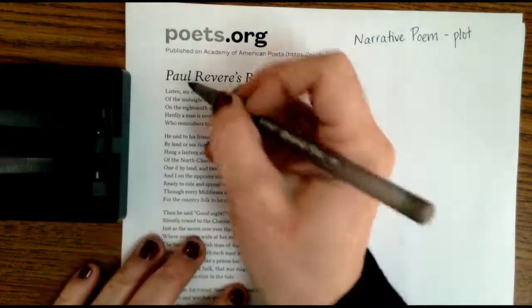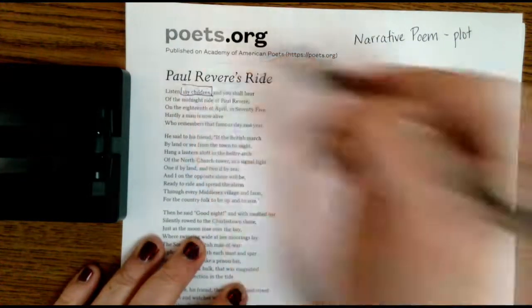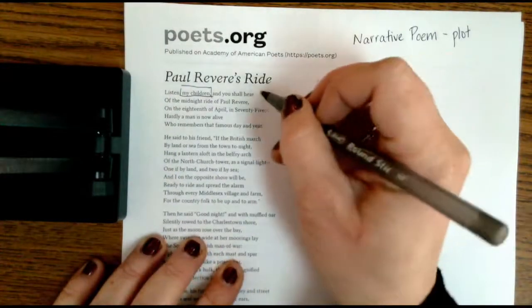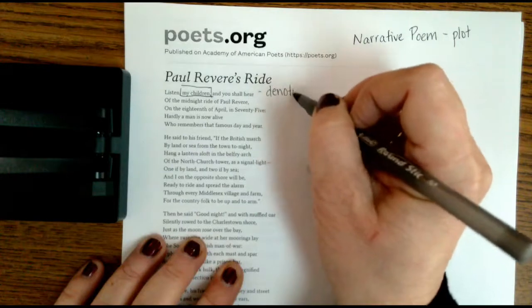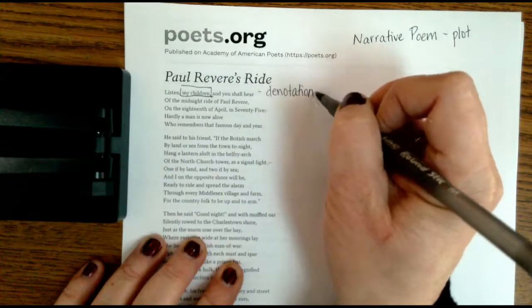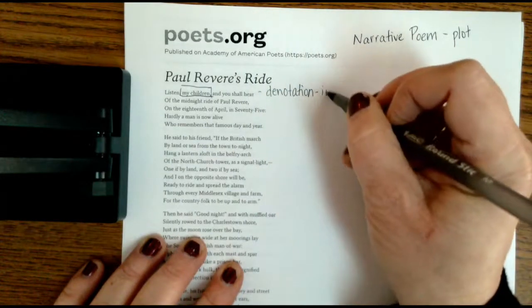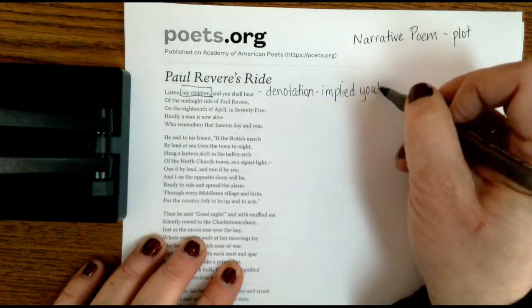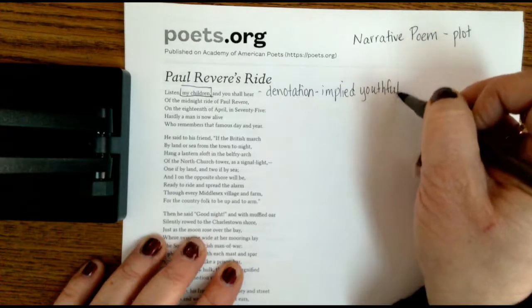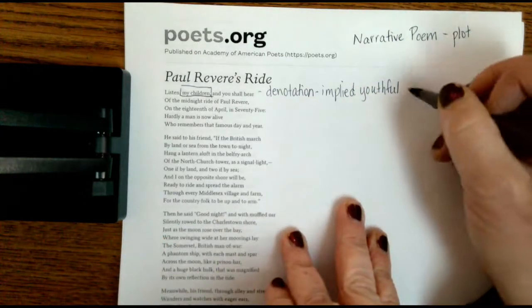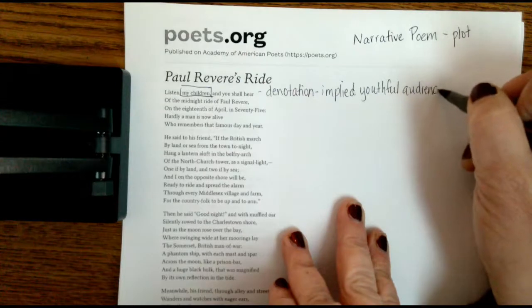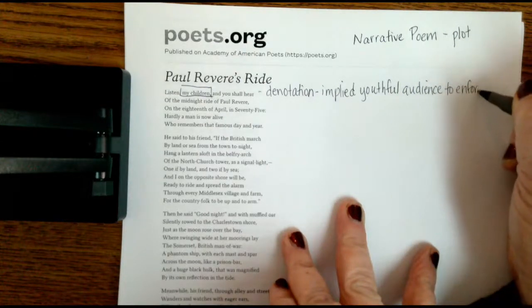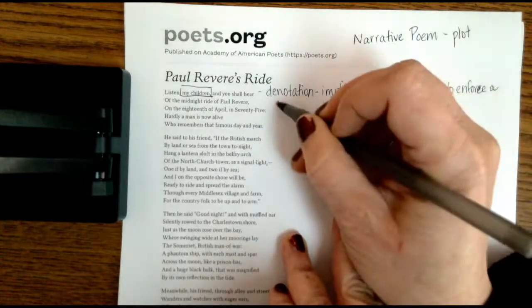So the first thing I want us to do is I want us to put a little square around my children. And this is a form of denotation. It implies youthful audience to enforce a childlike rhythm.